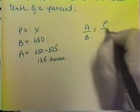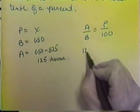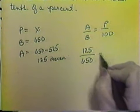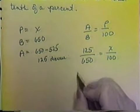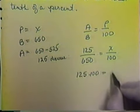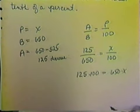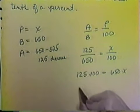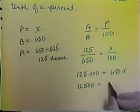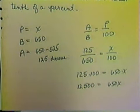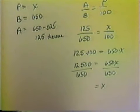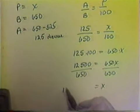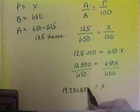Amount over base is equal to the percent over 100. So the amount was $1.25 over the base, which was $6.50, is equal to the percent — which is what we're looking for — over 100. To solve this, we cross-multiply. So we get $1.25 times 100 is equal to $6.50 times X. $1.25 times 100 is $125, and $6.50 times X is just $6.50X. Now we divide both sides by $6.50.